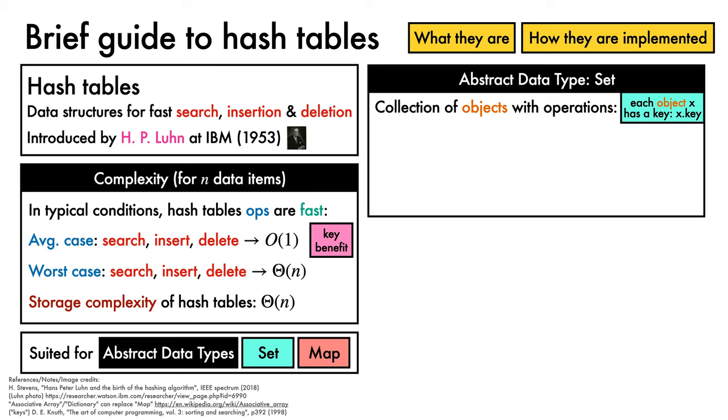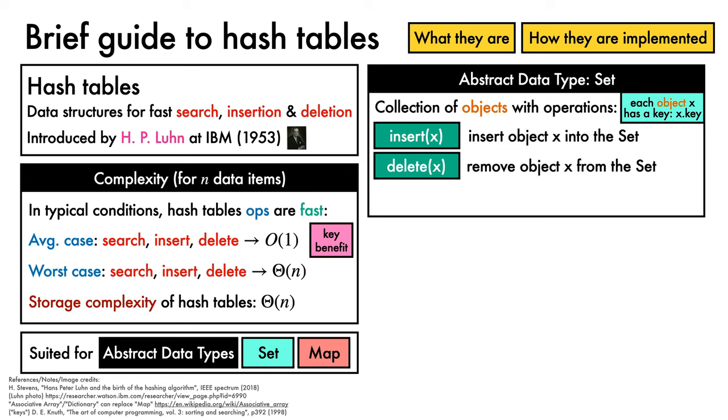As humorously noted by Donald Knuth, using keys for searching is highly appropriate, since many people spend a lot of time each day searching for their keys. Three of the essential set operations are insert x, which inserts object x into the set, delete x to remove object x from the set, and search key, which gets the object x if there is an x whose key matches the query key, and otherwise raises an exception.